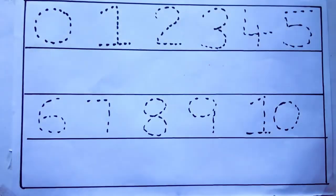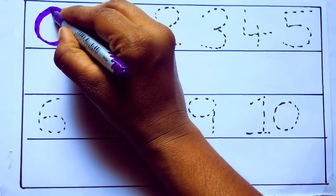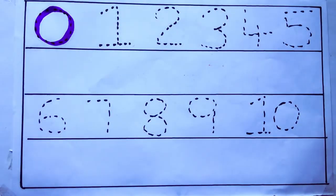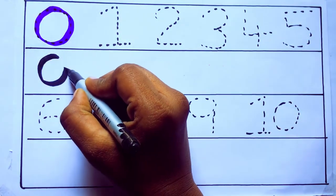Let's draw numbers. Violet color 0, Z-E-R-O. Violet color 0, 0.